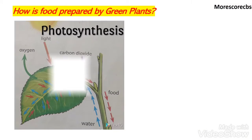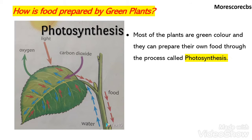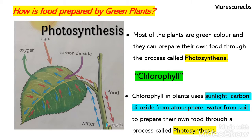Next, how is food prepared by green plants? Most plants around us are green in color. The green color of a plant is due to the presence of chlorophyll. Chlorophyll in plants uses light from the sun, carbon dioxide from the atmosphere, and water from the soil to prepare their own food through the process called photosynthesis.